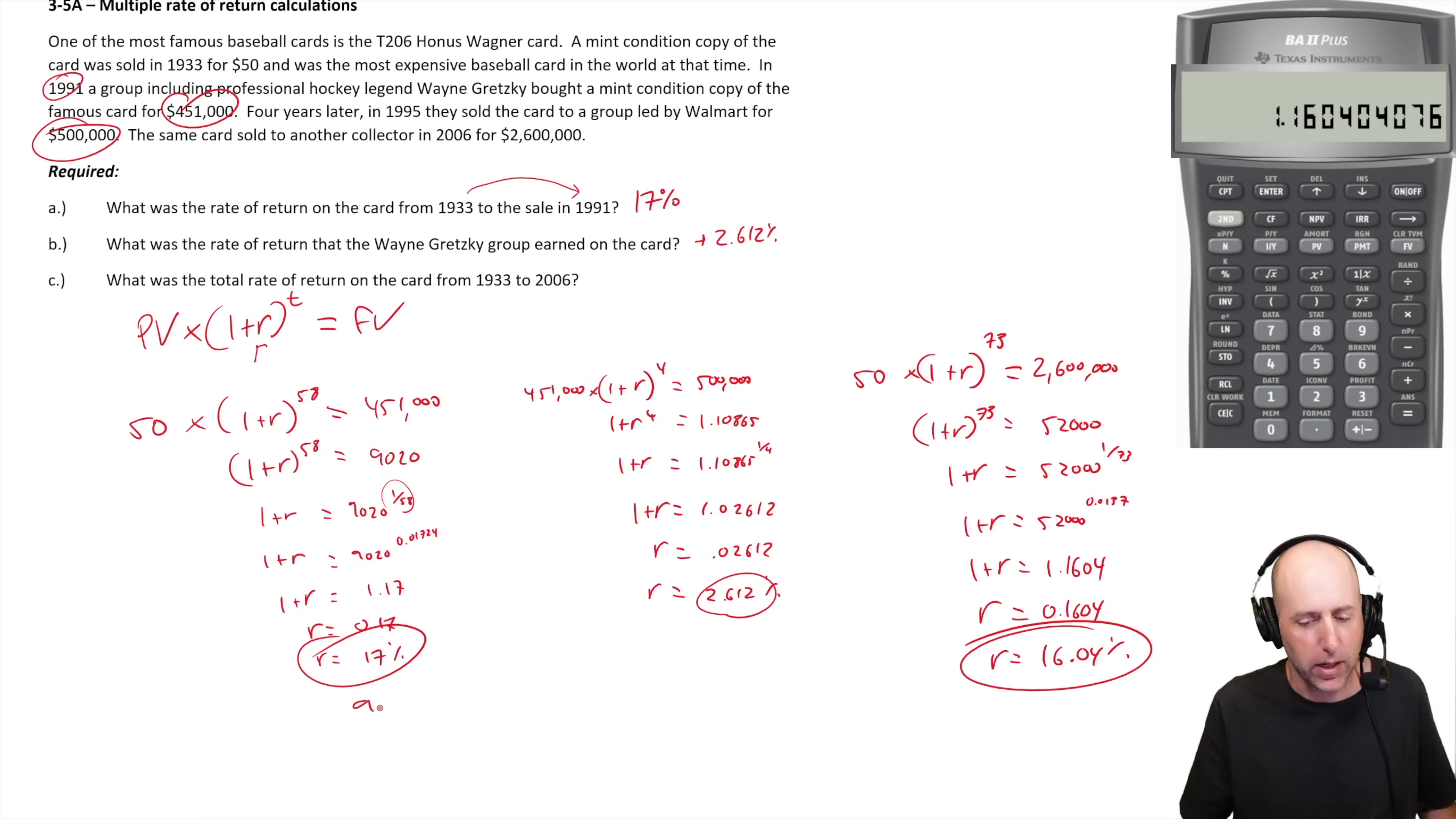There we have it. We've solved part A: 17% is the return from 1933 to 1991. The Gretzky group did very poorly on the card, only earning 2.6% over their short ownership. But over the life of the card from 1933 to 2006, if you had owned it the whole time, you would have gotten 16% return on your money. That's our answer to part C.